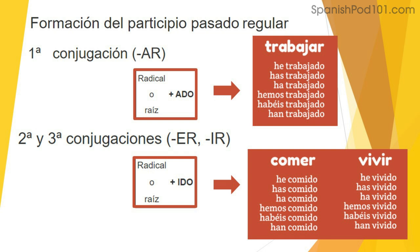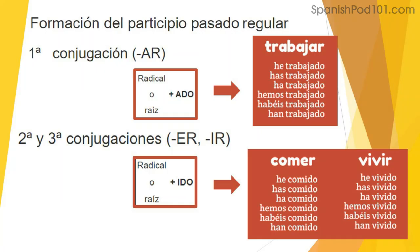Para los verbos que terminan en "-er" o "-ir", vamos a cambiar la terminación por "-ido". Por ejemplo, comer — su participio pasado es "comido": he comido, has comido, ha comido, hemos comido, habéis comido, han comido. Con el verbo vivir — su participio pasado es "vivido": he vivido, has vivido, ha vivido, hemos vivido, habéis vivido, han vivido.